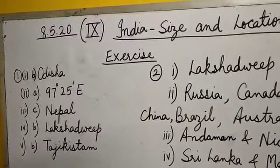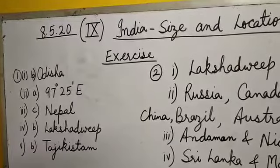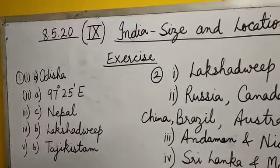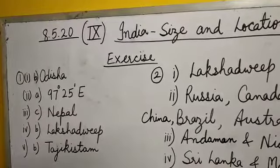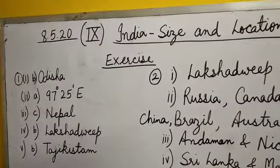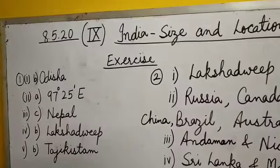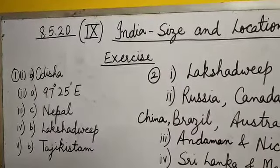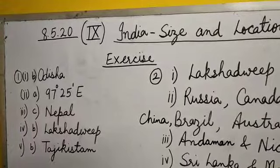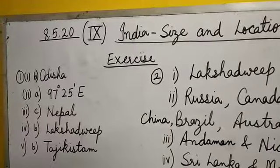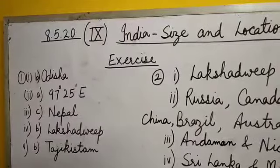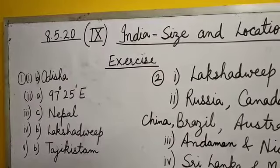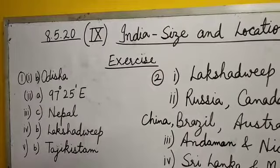I told you that there are nine union territories. But on 26 January 2020, Dadra and Nagar Haveli and Daman and Diu became one. So now there are only eight union territories in 2020 — Dadra and Nagar Haveli and Daman and Diu became one union territory.